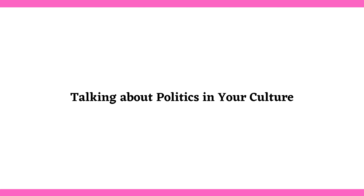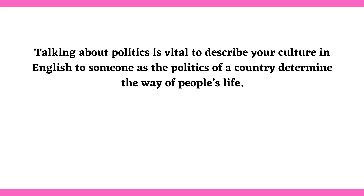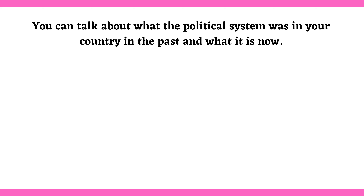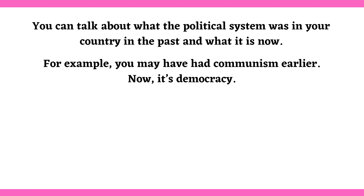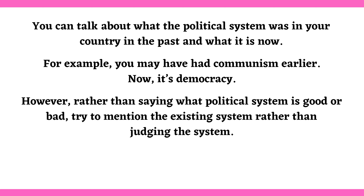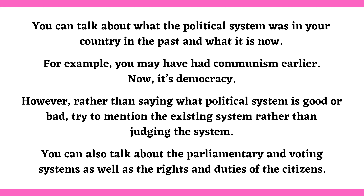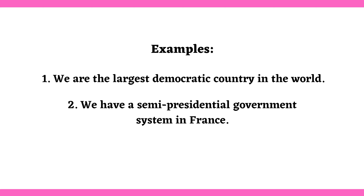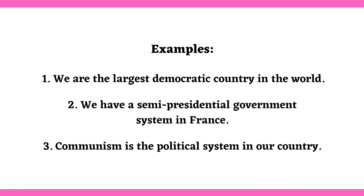Talking about politics in your culture. Talking about politics is vital to describe your culture in English as the politics of a country determine the way of people's life. However, while talking about politics, be mindful that you don't say anything that may hurt the political ego of the person you are talking to. You can talk about what the political system was in your country in the past and what it is now — for example, you may have heard communism earlier, now it's democracy. Rather than saying what political system is good or bad, try to mention the existing system rather than judging it. You can also talk about the parliamentary and voting systems as well as the rights and duties of citizens. Examples: We are the largest democratic country in the world. We have a semi-presidential government system in France. Communism is the political system in our country.